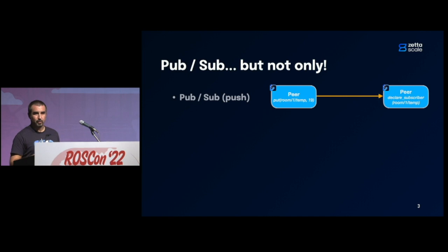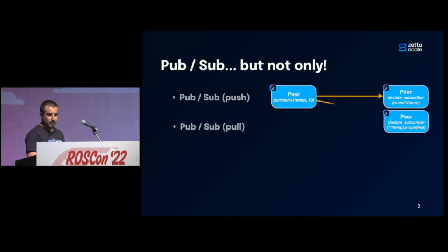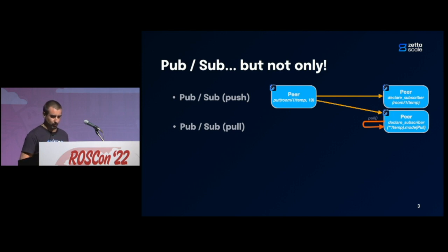First, it supports regular PubSub communication — publication subscription in a push mode, where you declare in your subscriber a callback that will receive all publications made by another distant application. But it also supports pull mode. In pull mode, all publications go up to the middleware of the subscriber, which keeps the latest publication in memory, and your application can pull this latest publication at its own pace, allowing you to temper down your flow of data on the subscriber side.